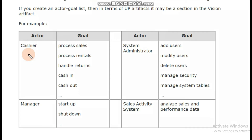Once we have the actor-goal list created, we have learned that we will draw a use case diagram after reviewing and refining the list. We can represent the actors and goals in the use case diagram. Actors are represented using a stick-figure shape, and goals are represented using an oval or ellipse shape through which we can depict the use case diagram.